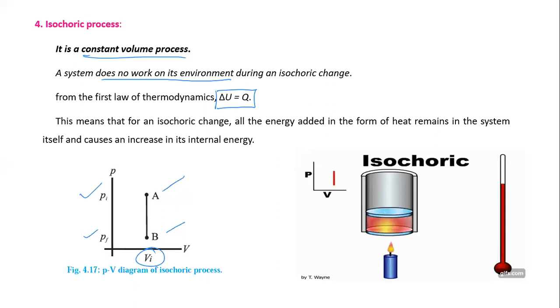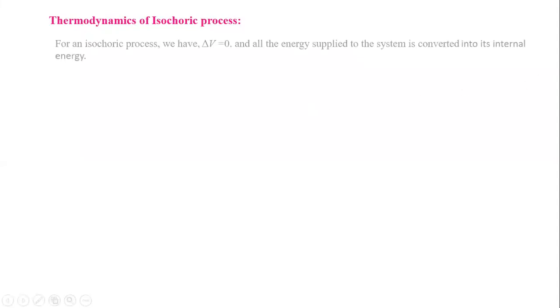This means that for an isochoric change, all the energy added in the form of heat remains in the system itself and causes an increase in internal energy. For an isochoric process, the change in volume equals zero, and all the energy supplied to the system is converted into internal energy, since Q equals ΔU.